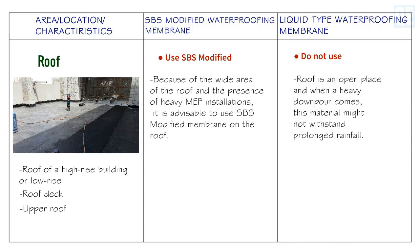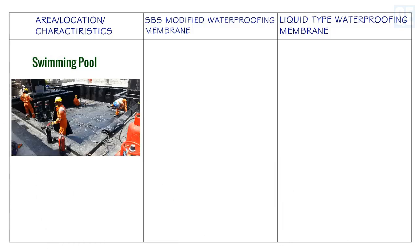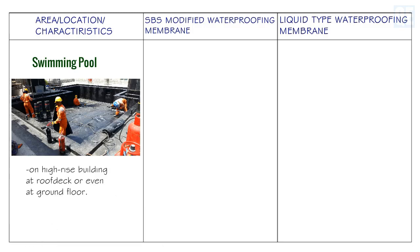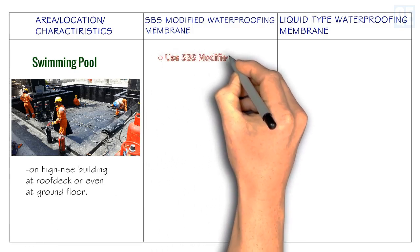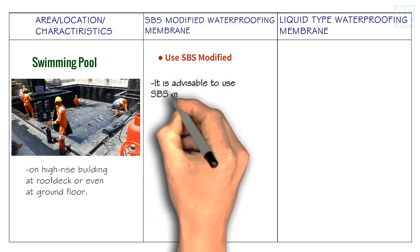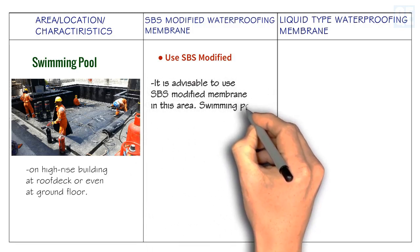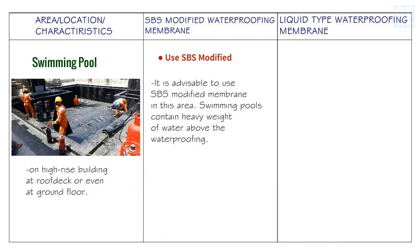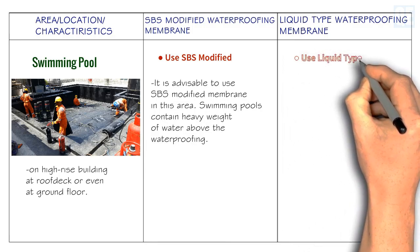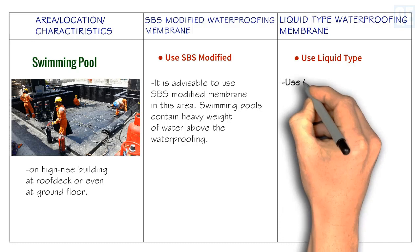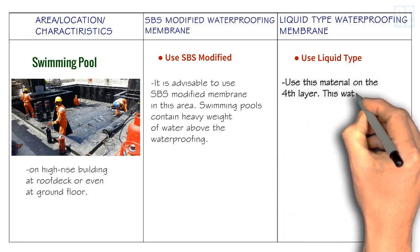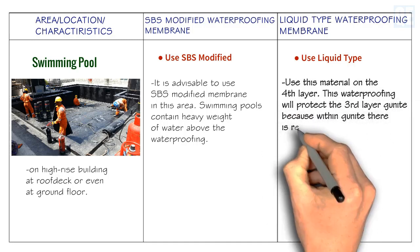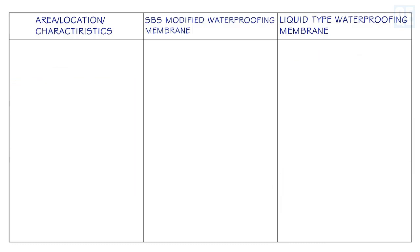Do not use liquid type waterproofing on the roof, as it is an open place and this material might not withstand prolonged heavy rainfall. For swimming pools — whether on a high-rise building roof deck or at ground floor — use SBS modified waterproofing membrane, as swimming pools contain heavy weight of water above the waterproofing. You can also use liquid waterproofing on the fourth layer to protect the third layer of gunite, since gunite contains reinforcement.